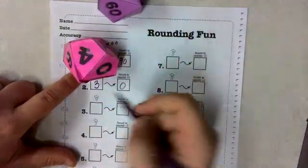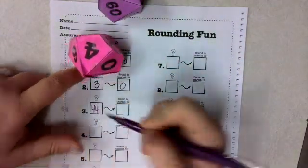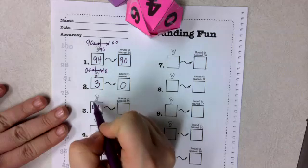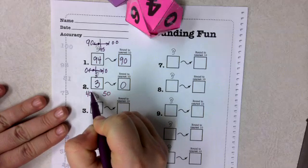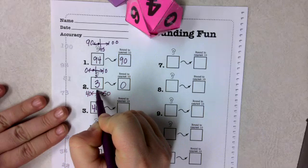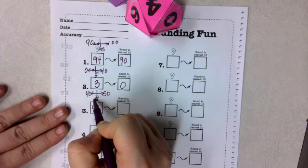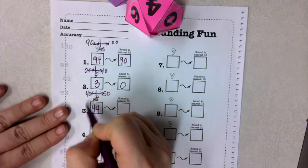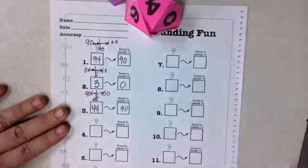Next one. 44. What are the tens that this number is between? It's between 40 and 50. Where's the five? There it is. And so where's 44 fall? It's closer to 40.